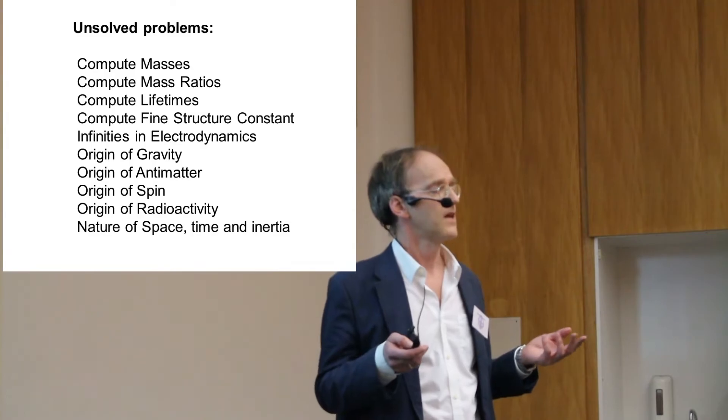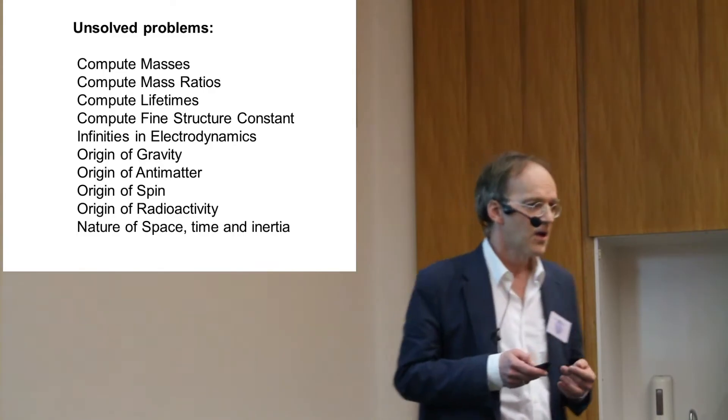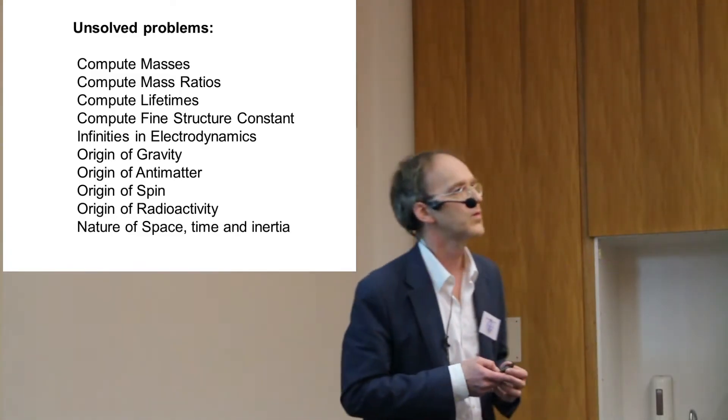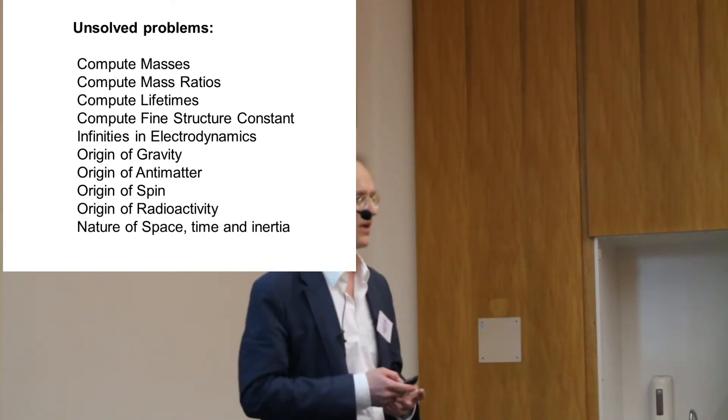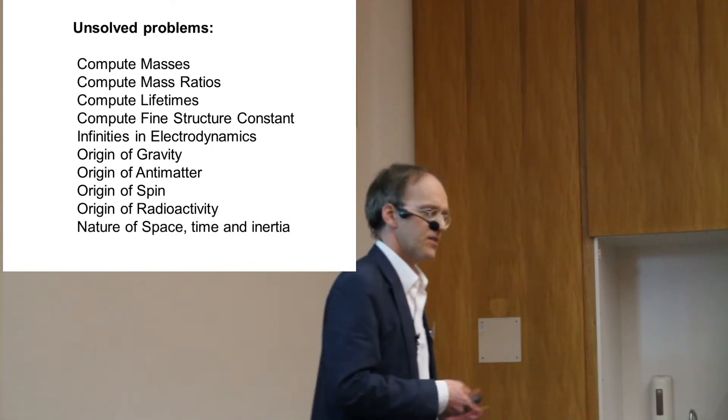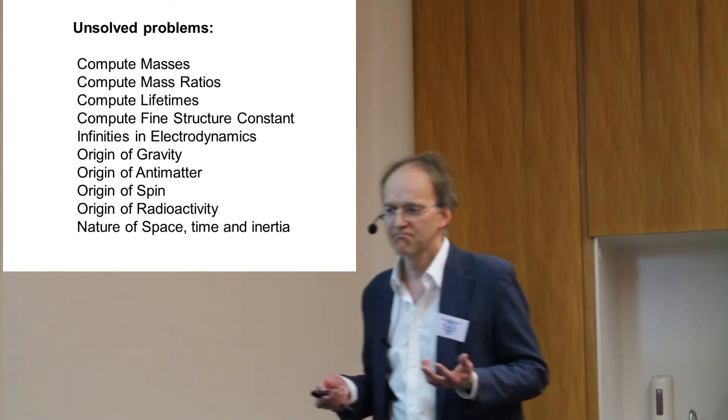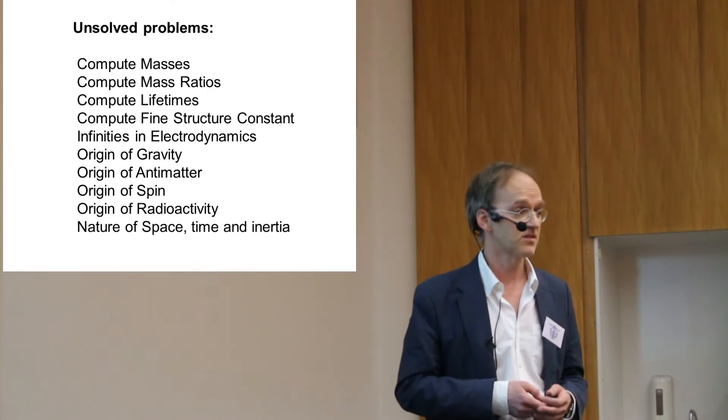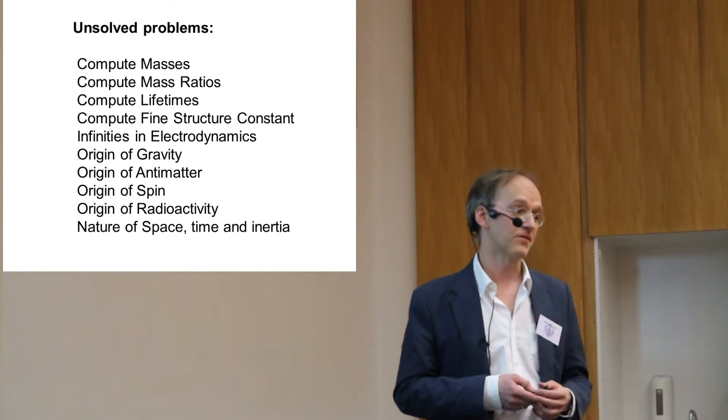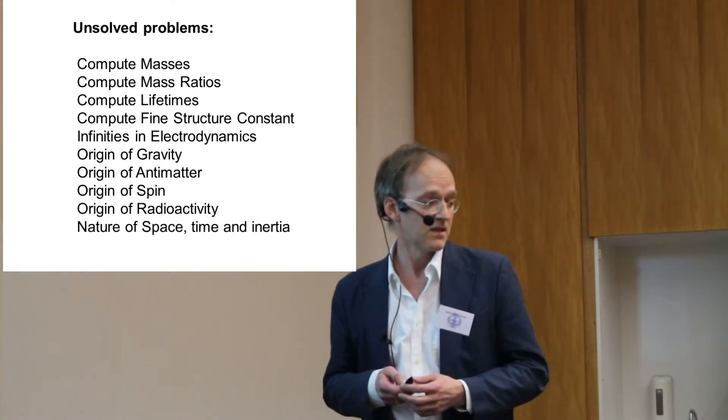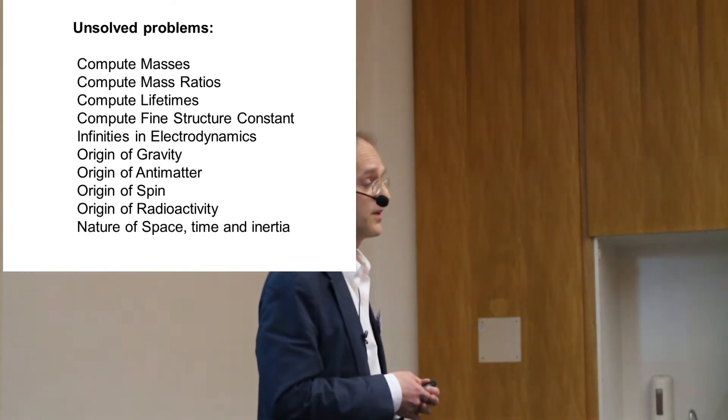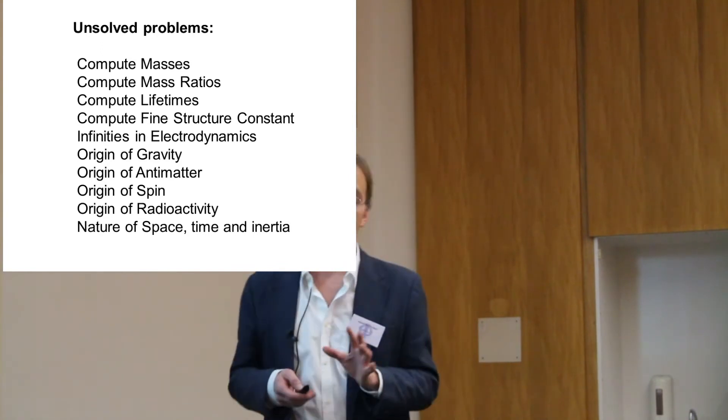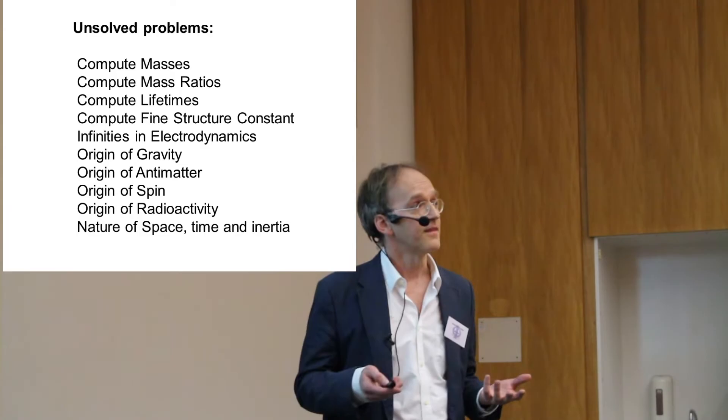So I shall just name you some unsolved problems. You can't compute masses. Take as an example Paul Dirac. He pondered for years of his life about the mass ratio of proton and electron. And he was putting all his intellect and all his efforts into this question. He would be disgusted about the idea explaining it with a symmetry breaking or something like that. That's a cheap excuse. So the standard model can't compute masses. It cannot compute mass ratios. It cannot compute lifetimes. It cannot compute the fine structure constant. It cannot explain the infinities in electrodynamics. It says nothing about the origin of gravity, the origin of antimatter. It can't tell you why we need spin. It says nothing about the origin of radioactivity, about the nature of space, time, and inertia. A model of physics which has nothing to say about all these fundamental questions is crap. And that's where supersymmetry is built upon.